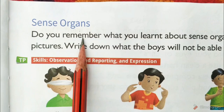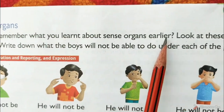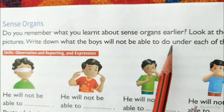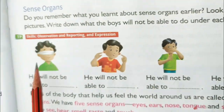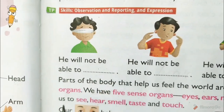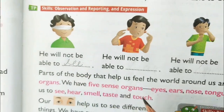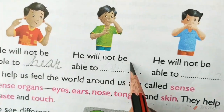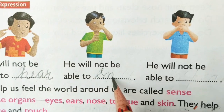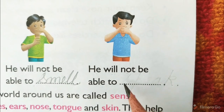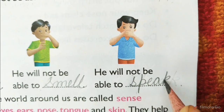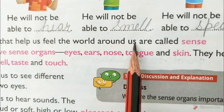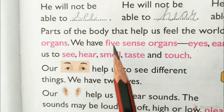Sense organs. Do you remember what you learnt about sense organs earlier? Look at these pictures. Write down what the boys will not be able to do under each of the pictures. He will not be able to see. He will not be able to hear. He will not be able to smell. He will not be able to speak. Parts of the body that help us feel the world around us are called sense organs. We have five sense organs.